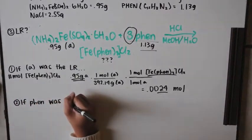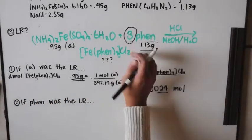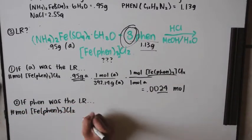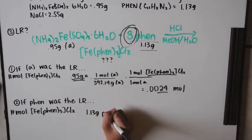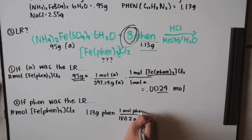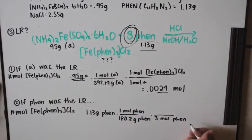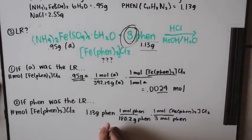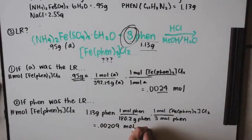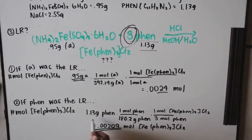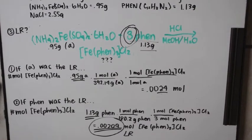If phen were the limiting reagent, starting with 1.13 grams, you'd use molar mass and then apply the three-to-one mole ratio, since three phen produces one mole of iron tris-phen chloride salt. That gives 0.00209 moles. Since this is less than 0.0024, phen is your limiting reagent.